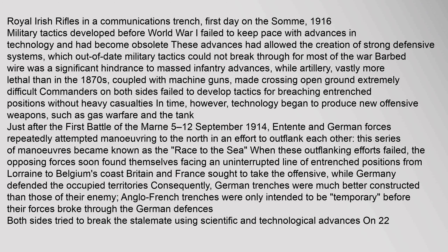Technology began to produce new offensive weapons, such as gas warfare and the tank. Just after the First Battle of the Marne, Entente and German forces repeatedly attempted maneuvering to the north in an effort to outflank each other — this series of maneuvers became known as the Race to the Sea. When these outflanking efforts failed, the opposing forces soon found themselves facing an uninterrupted line of entrenched positions from Lorraine to Belgium's coast. Britain and France sought to take the offensive, while Germany defended the occupied territories. German trenches were much better constructed than those of their enemy; Anglo-French trenches were only intended to be temporary before their forces broke through the German defenses.